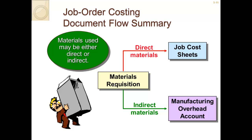Here's how documents work in job order costing. A materials requisition is a request for materials, and direct materials go directly on the job cost sheets. For example, 12 steel beams for Elms College Building are a direct material charged to the job. However, a box of screws or tape would go to the manufacturing overhead account, because those items may not all be used at one site and we don't track each screw individually.